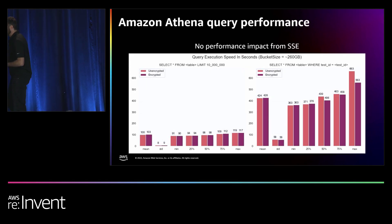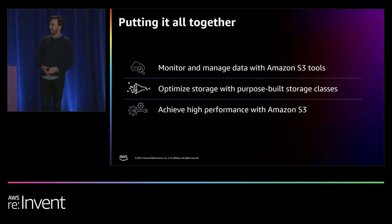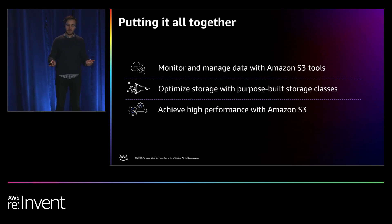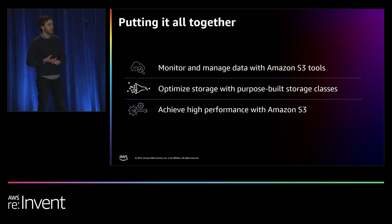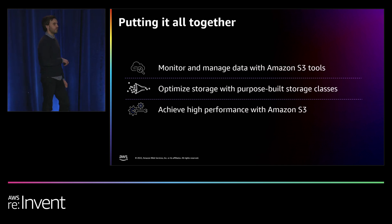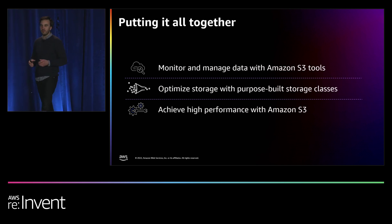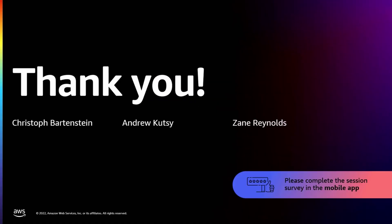Thank you, Zane. As we wrap up today, let's put it all together with three immediate steps you can take. First, switch on S3 Storage Lens for free to begin developing insights about your storage. Second, use S3 Intelligent-Tiering to automatically optimize your storage, or use one of our specialized storage classes. Third, to optimize performance, think about scaling horizontally on uploads and downloads. Thank you, and have a great rest of your week at re:Invent. We'll stick around for Q&A offstage.